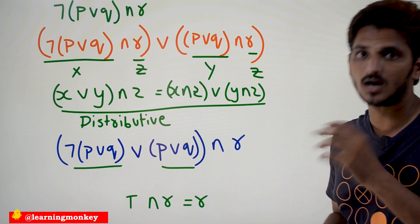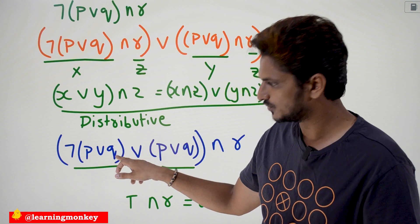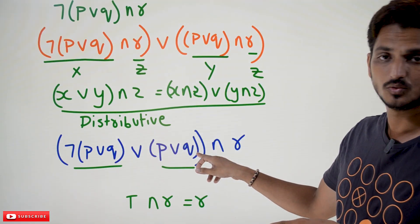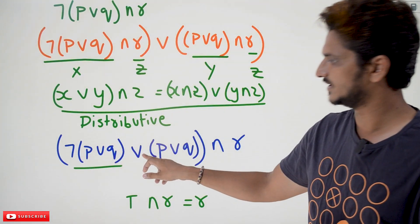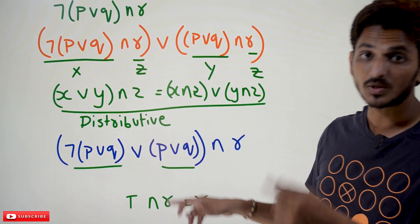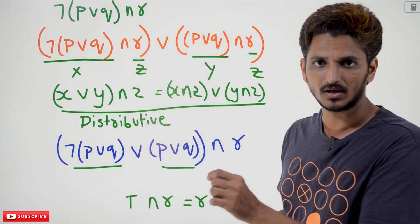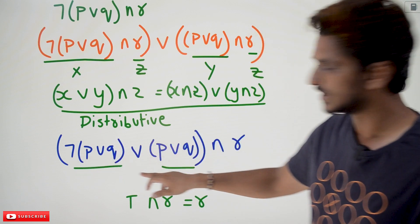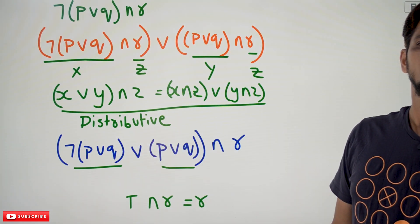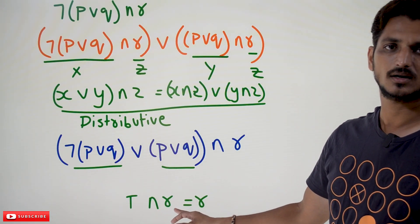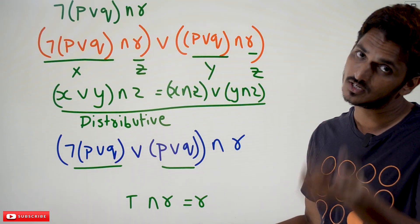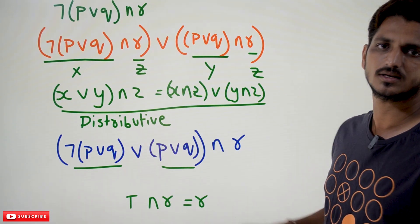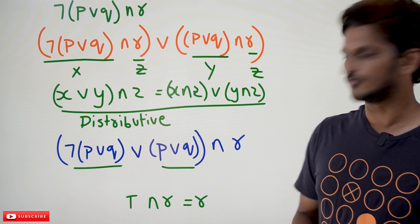This is the output we got finally, but we need to show it as R. By looking at this: P disjunction Q is considered as X, so we have negation X disjunction X. From previous equations, negation P disjunction P is always true. So this entire equation — negation X disjunction X — is always true. True conjunction R can be written as R by the identity law which we discussed in our previous class. Finally we got the output R.